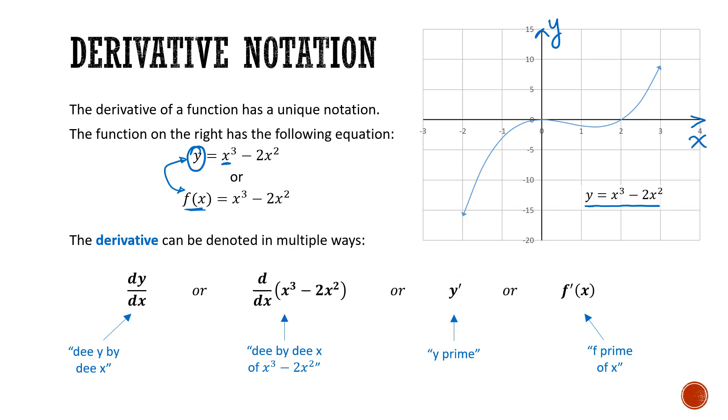So in the end, we essentially have two different types of notations. We've got the d by dx type notation that we see here. And we have the prime notation that we see here.